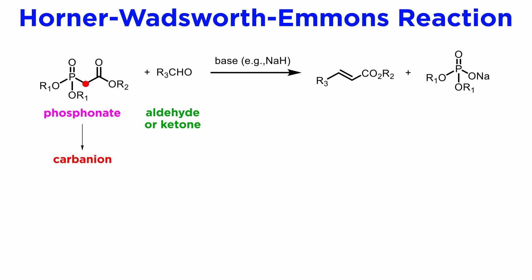The reaction consists of the addition of stabilized carbanions from phosphonates to aldehydes and ketones. Note that the reaction only works if these carbanions are not only stabilized by a phosphonate group but also by an ester or another electron-withdrawing functionality, such as ketone, amide, or nitrile.